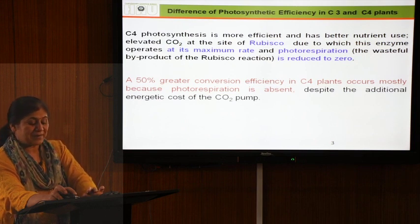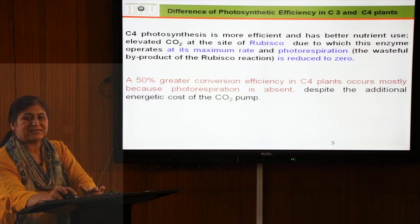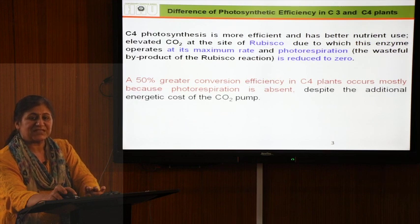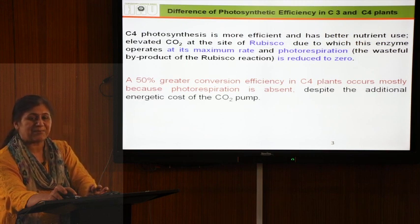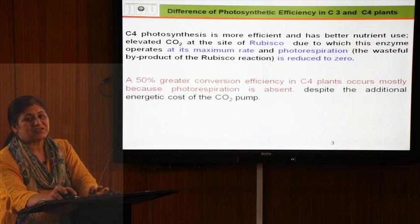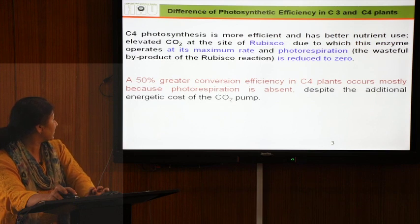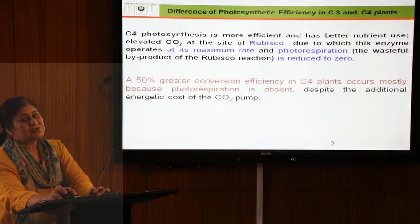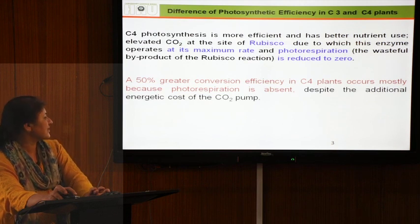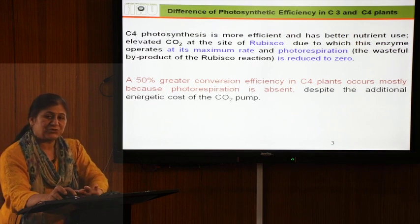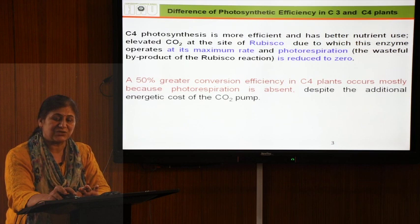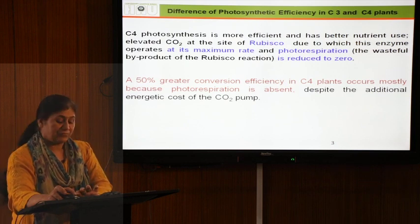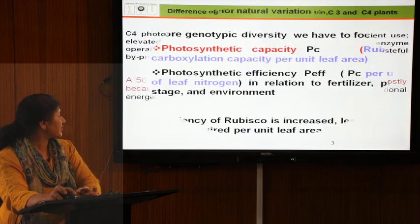The key difference between C3 and C4 plants is that C4 plants have a mechanism for concentrating CO2 — achieved by the additional enzyme PEP carboxylase, which fixes CO2 and re-releases it at the rubisco site. This results in about 50% greater conversion efficiency in C4 plants, mostly because photorespiration is absent, even though C4 plants perform the additional work of CO2 concentration.